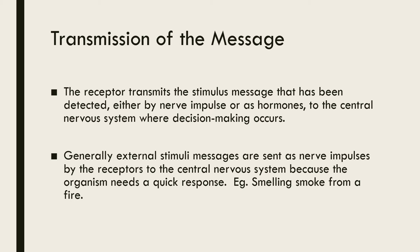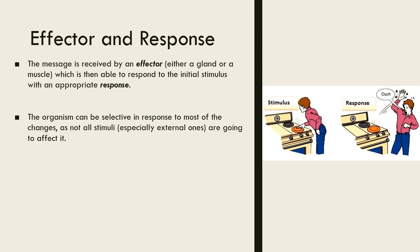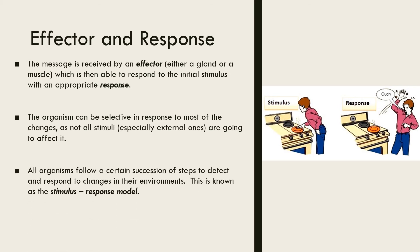For example, when smelling smoke from a fire. When a response is selected — consciously or unconsciously — by the central nervous system, the signal is transmitted via neurons to effectors. Effectors are organs, either muscles or glands, that produce a response to a stimulus. A response is a change in the organism resulting from the detection of a stimulus. Organisms can be selective about which stimuli they respond to, especially external ones, as not all stimuli are going to affect it. Ultimately, all organisms follow a certain succession of steps to detect and respond to changes in their environments. This is known as the stimulus response model.